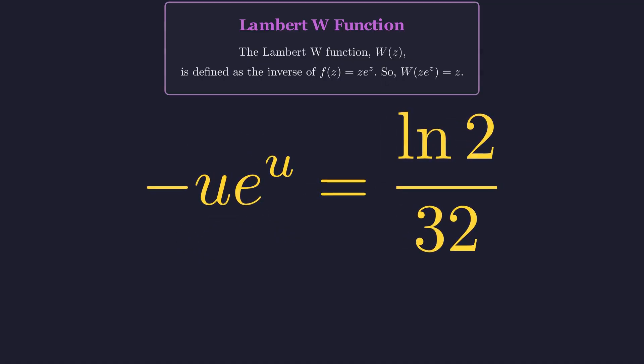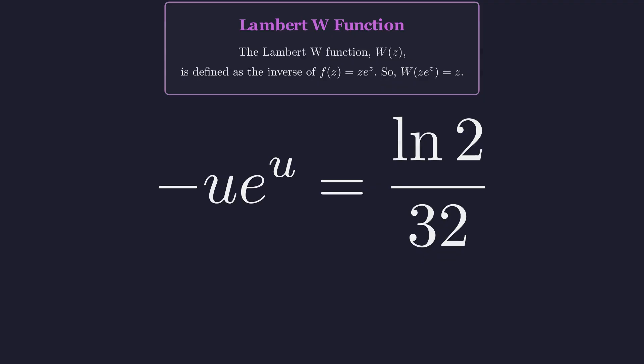Finally, we multiply both sides by negative 1 to get the perfect Lambert form. Now we have u times e to the u equals negative the logarithm of 2 over 32. We can now apply the w function.